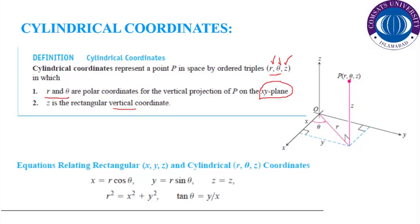If you want to show any point on a cylinder, the projection of that point onto the xy plane reconstructs a circle. If you construct a circle, this is the radius and this is the angle theta from the x-axis. Any point on the cylinder will have a projection on the xy plane, from which we can determine R and theta, while this height is called the z component.